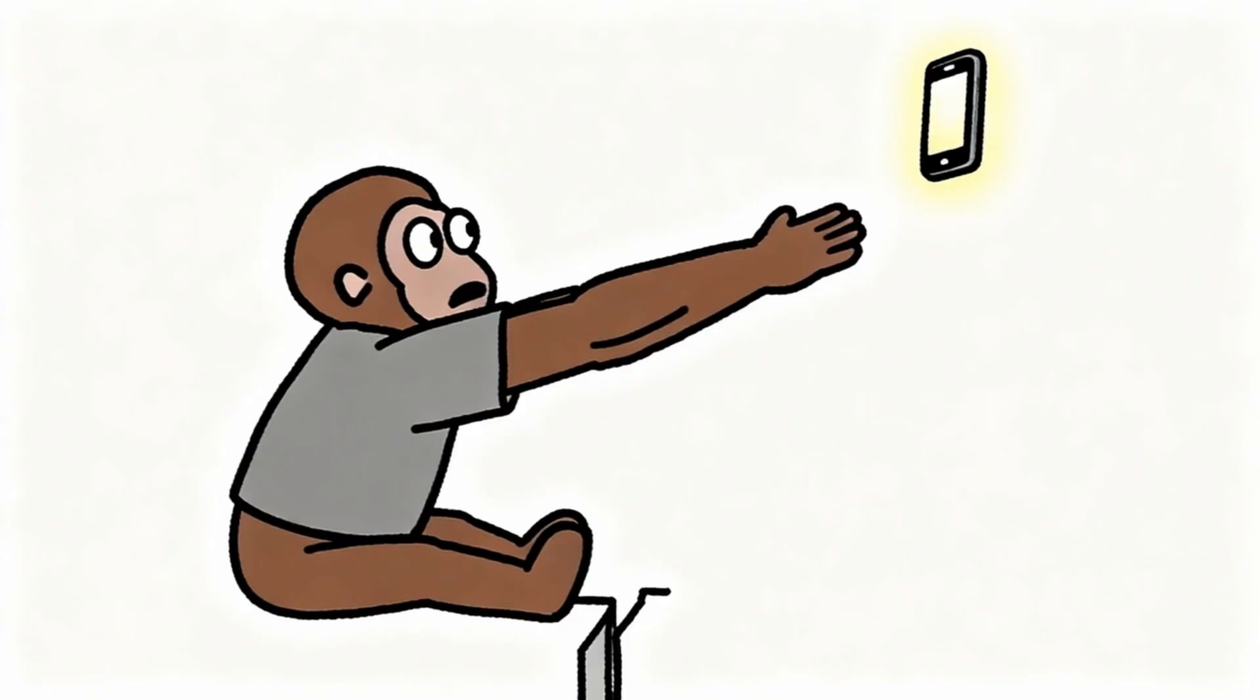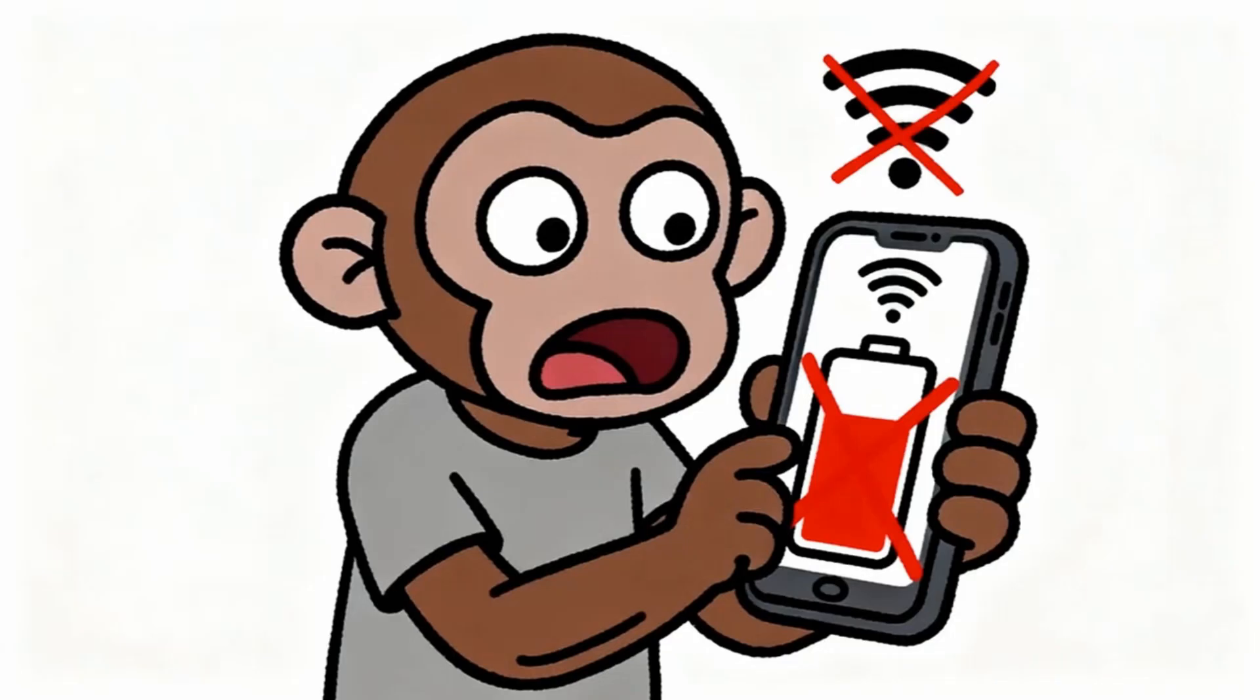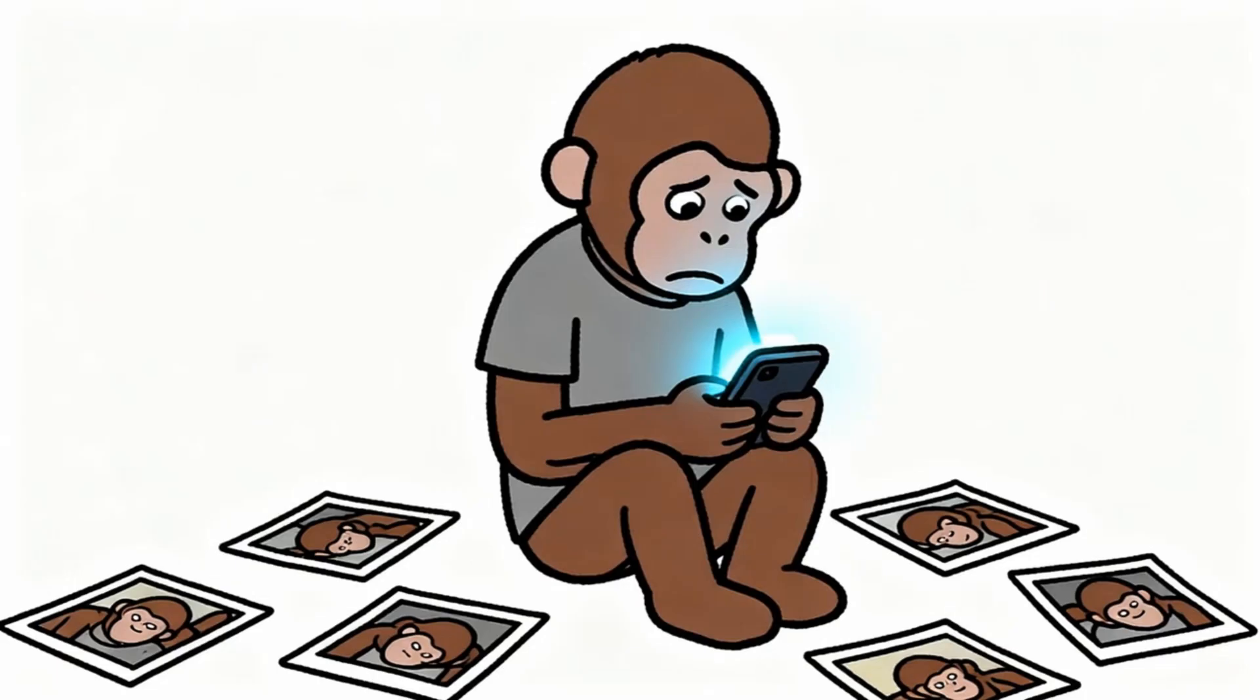Monkey starts experiencing withdrawal symptoms when separated from dopamine delivery devices. Anxiety increases when phone battery dies. Panic sets in when internet connection fails. Boredom becomes unbearable without constant stimulation. These are the same symptoms experienced by monkeys addicted to actual drugs because the brain pathways involved are identical. The dopamine trap affects every area of monkey life.